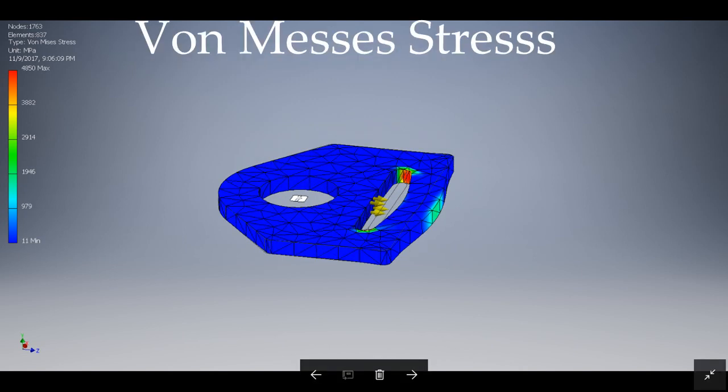Again, the von Mises stress show a pulling to the right motion, which is exemplified in the corners of our design, where the red area is located, showing that that is the area with the most stress subjection.